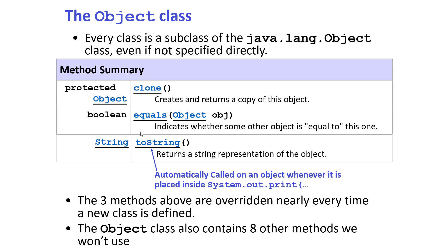It is your responsibility to write an equals method in whichever class you create so that you can check whether two objects of the same class are equal. For a Circle class, you might compare the radius. The return type of equals should be boolean: true if the objects are equal, false if not. That's how you should define or override the equals method.